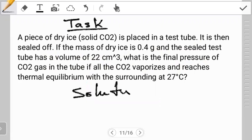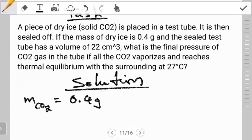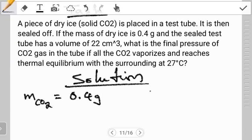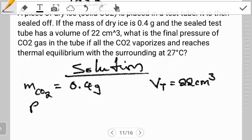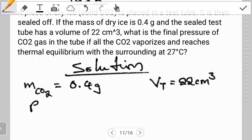The first step that we have to do is just to get the information that the question gives us. So we're doing carbon dioxide and the mass of CO2 is 0.4 grams. Next, the volume of the test tube is 22 cm³. We want to find the final pressure of the gas in the test tube if all the CO2 vaporizes to reach equilibrium with the surrounding at 27°C, implying that the temperature of the gas is 27°C.